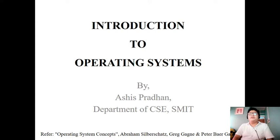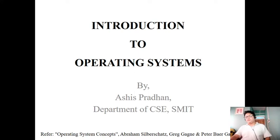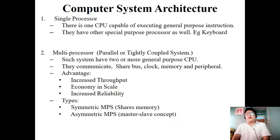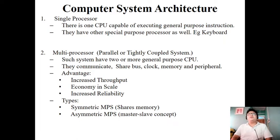Hello, today we will be discussing different types of systems based on architecture and the various kinds of services provided by the operating system to the user and the system itself. We have seen in our previous session the evolution of the operating system, from batch OS to multitasking. Today we will be discussing, based on computer architecture, the different kinds of computer systems.